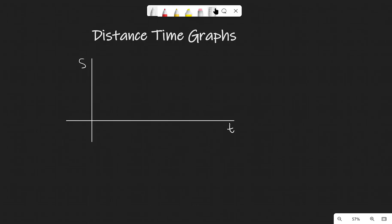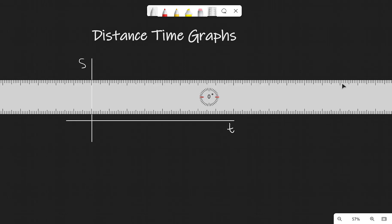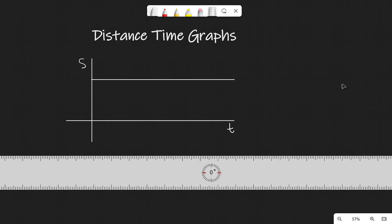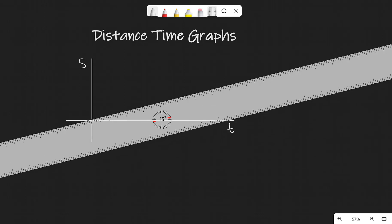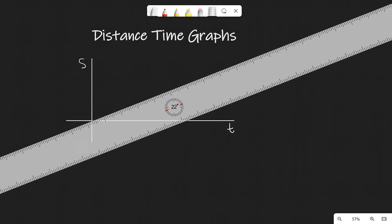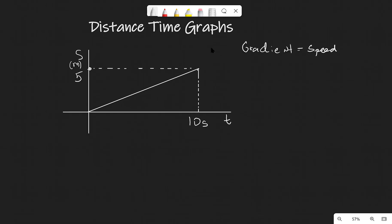Now let's look at distance-time graphs. If an object is stationary, the distance s will not change, and this is represented with a straight horizontal line. However, if the object is moving at a constant speed, the graph would be a straight line through the origin.